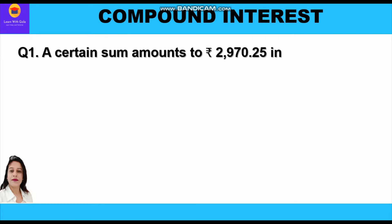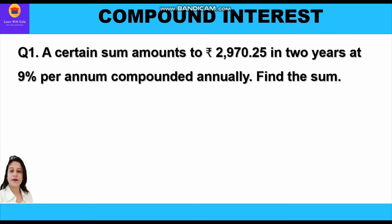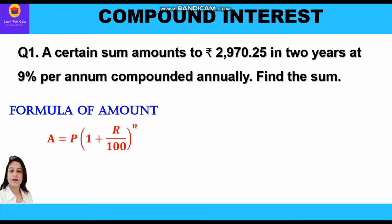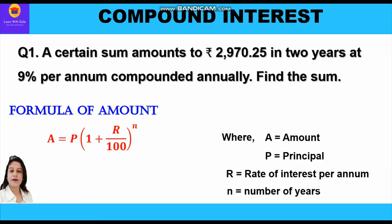Let's start with the first question. A certain sum amounts to rupees 2970.25 in two years at nine percent per annum compounded annually. Find the sum. Sum means principal. The amount given is 2970.25, time period is two years, and rate of interest is nine percent per annum. To find the sum we shall apply the formula: A is equal to P into bracket one plus R upon hundred, whole raised to power N.